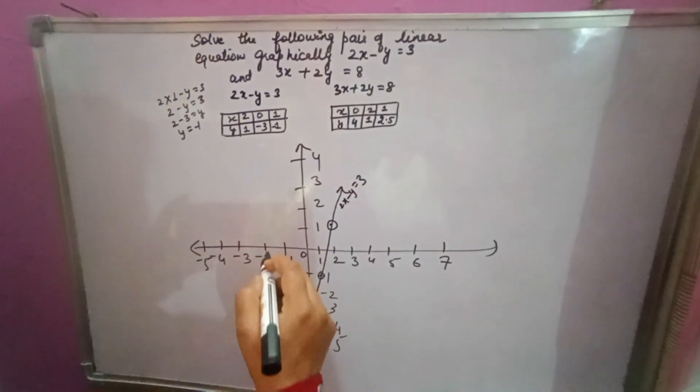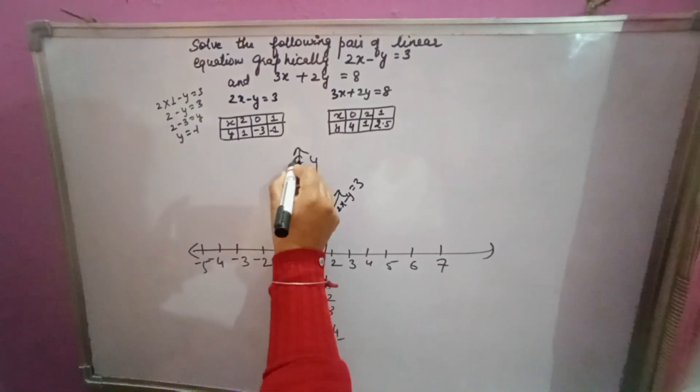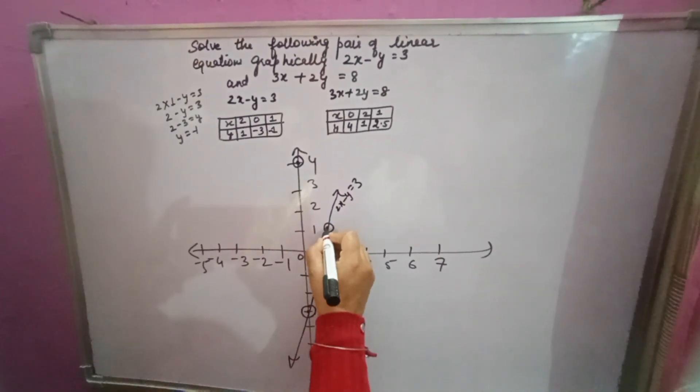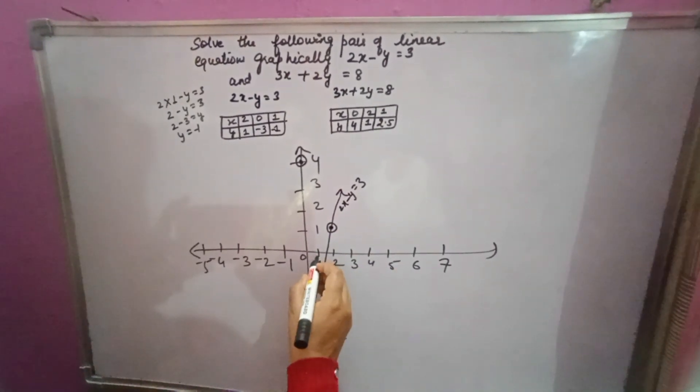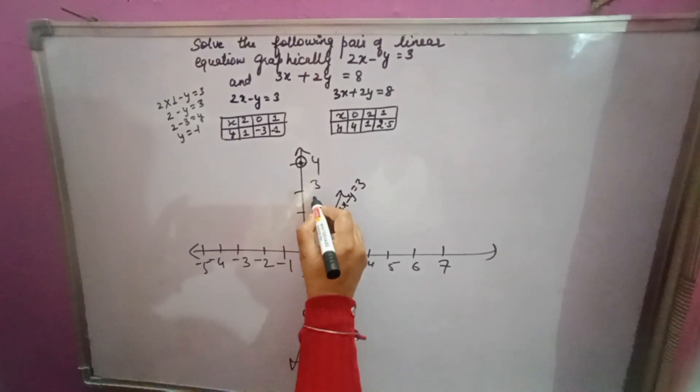Now 3x plus 2y equals 8. x is 0, y is 4. So one point will come here. Second point, x is 2, y is 1. So it will again come here. It is the only solution. x is 1, y is 2.5.